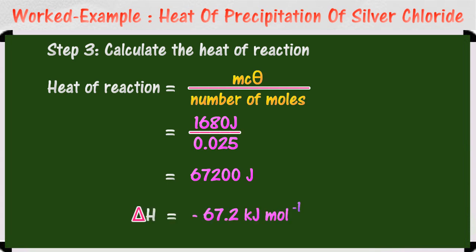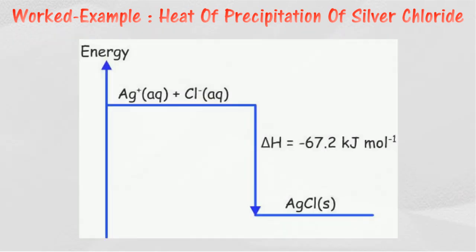Since this is an exothermic reaction, the heat of precipitation of silver chloride is negative 67.2 kJ per mol. The figure shows energy level diagram for the precipitation of silver chloride.